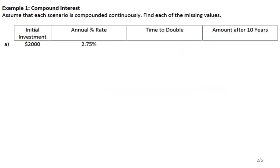Models are basically word problems. Example one says compound interest — assume that each scenario is compounded continuously, find each of the missing values. Continuously compounded interest has a formula: A equals P times e to the RT, where A is your final amount, P is your starting amount (your principal), R is your annual percent rate, and T is time in years.